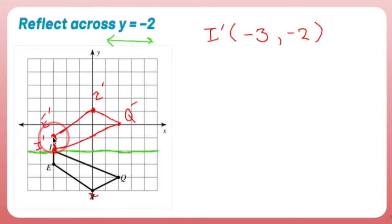E prime: start at the origin, go left 1, 2, 3, go down 1. So E prime is left 3, negative 3, down 1, negative 1.